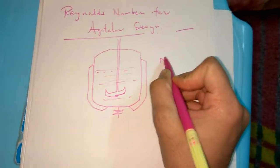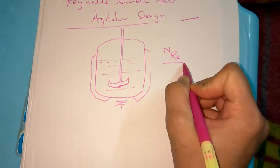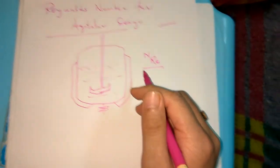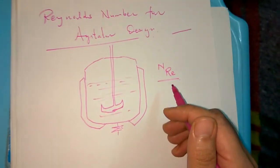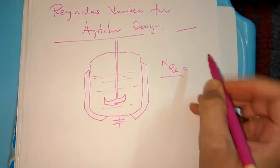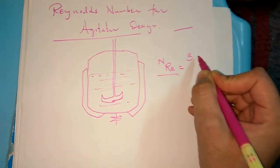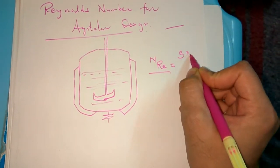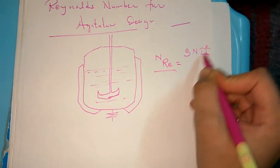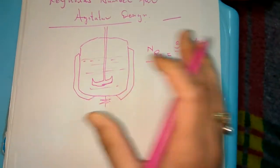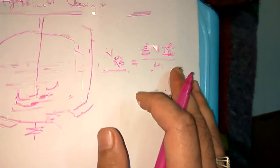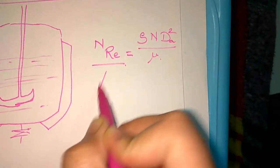So we have one reactor here, this is a batch reactor, and we have to find the Reynolds number. For the agitated problems there is one formula: Reynolds number is equal to rho N D_a squared divided by mu.